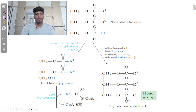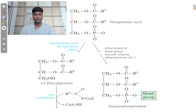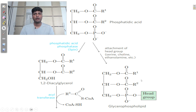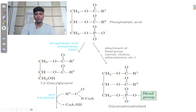This phosphatidic acid can be further converted into a triacylglycerol if the third carbon is again attached with a third fatty acid chain. Alternatively, if a particular head group — such as serine, choline, or ethanolamine — is attached to the third carbon, the net result will be a particular type of membrane phospholipid. Different types of head groups can be attached to the third carbon.